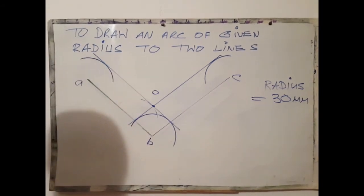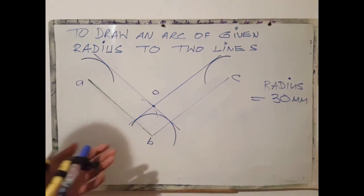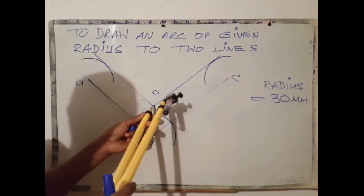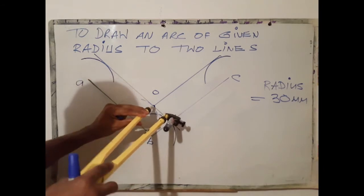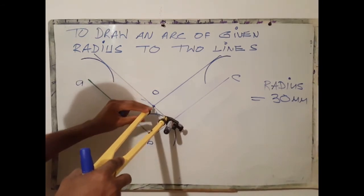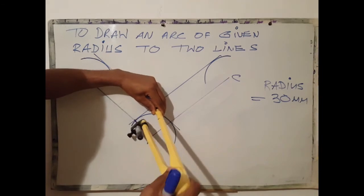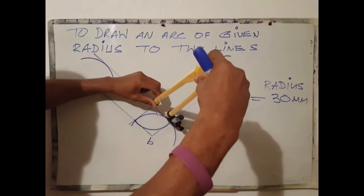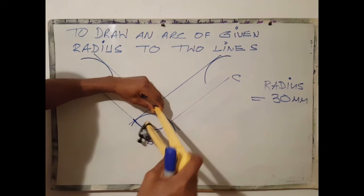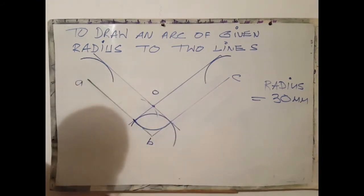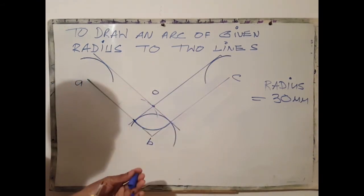Without changing the radius, use O as center. And it should blend smoothly. There we go.